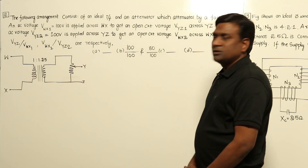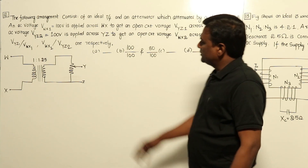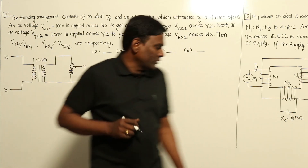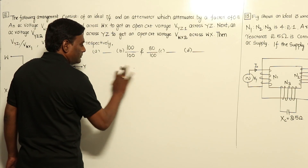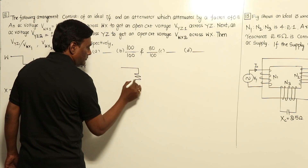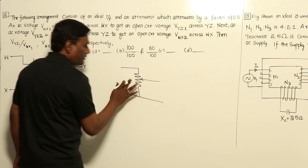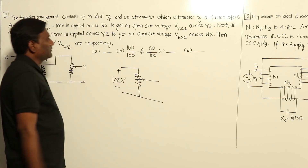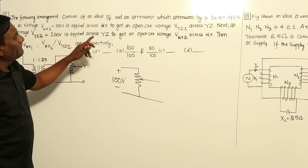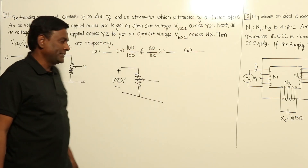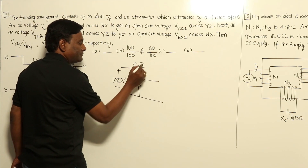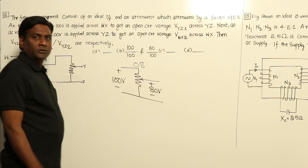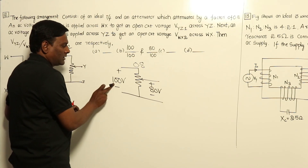This is a voltage question where a potential divider is given. If I supply 100 volts here, with an attenuation factor of 0.8, it means from input to output the voltage is going to be 80 volts.